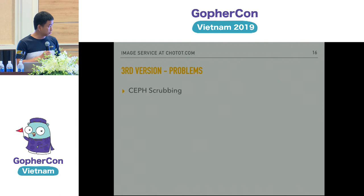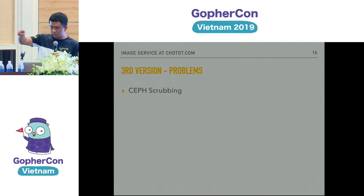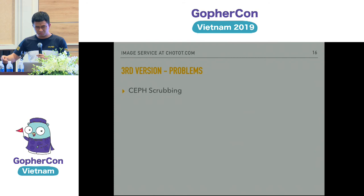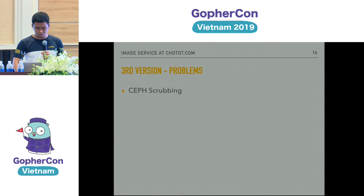But Ceph had a problem we had to face and solve: Ceph scrubbing. Like every distributed object storage system, it needs to verify that an object and its replicas on other nodes are exactly the same. Every time scrubbing happens it affected our system — performance went down and people could not access our website. So we decided to move on to Google Cloud.